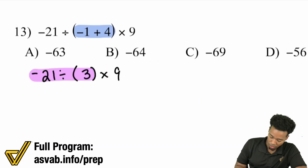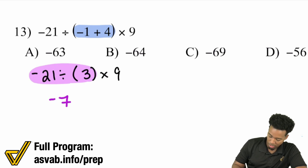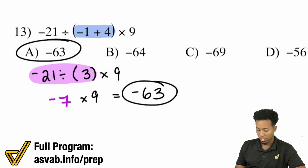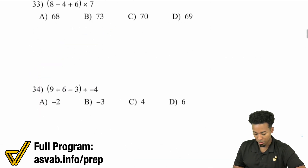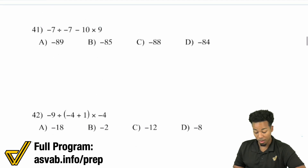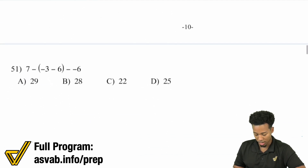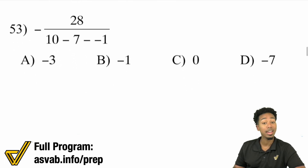Division comes first. Negative 21 divided by three is negative seven, and then you still have that times nine, which will give you negative 63. With that said, I'm going to skip on over into the other part here, where we're going to do five more problems when it comes to fractions. Let's see the problems where we have fractions involved.